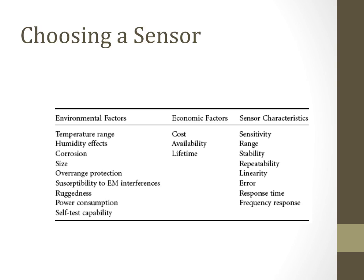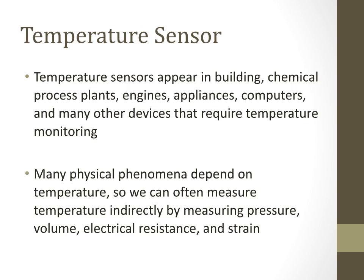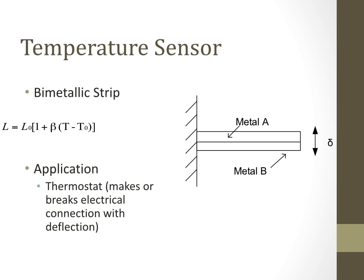Other selection criteria include error, response time, and frequency response. Temperature sensors appear in buildings, chemical process plants, engines, appliances, computers, and many other devices requiring temperature monitoring. Many physical phenomena depend on temperature, so we can often measure it indirectly by measuring pressure, volume, or electric resistance. One application is the bi-metallic strip thermostat, which makes or breaks an electrical connection when excess temperature causes deflection.